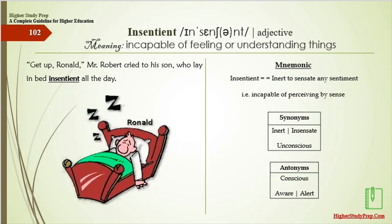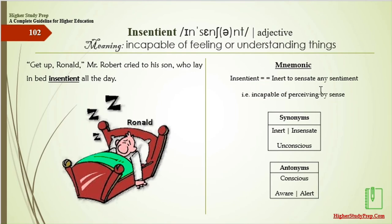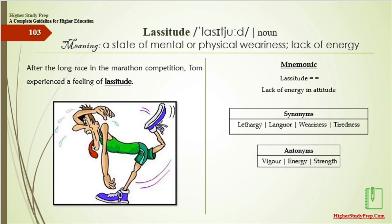Insentient means incapable of feeling or understanding things. Mr. Robert cried to his son Ronald who laid in bed insentient all day. Insentient also means inert, insensate, or unconscious — anything that is incapable of perceiving by sense. The antonyms of insentient are conscious, aware, or alert.